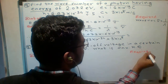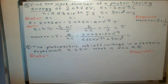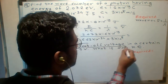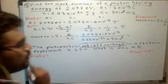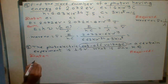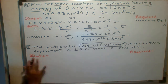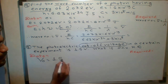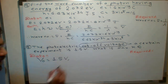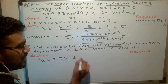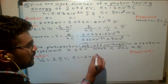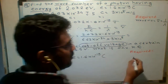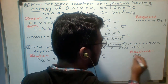The next question is on the photoelectric cutoff voltage — that means stopping potential. The stopping potential V₀ is 1.5 volt, and e = 1.6 × 10⁻¹⁹ coulomb as a standard value. The question asks us to find the maximum kinetic energy.